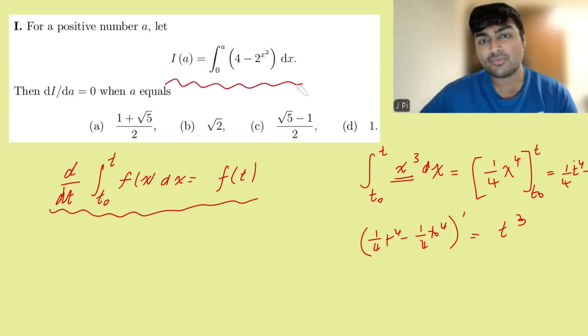So we can now apply that rule over here. When we differentiate I(a) with respect to a, it's the integral from 0 to a of some function of x. So this I'(a), when we differentiate it, that's simply going to equal 4 - 2^(a²).